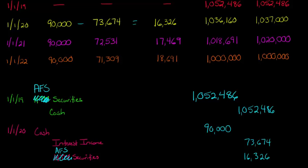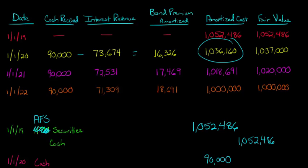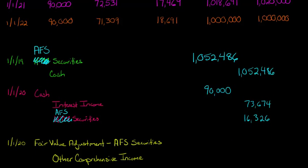Now you might say this is pretty much the same as held-to-maturity — what's the difference? Well, because we're carrying this at fair value instead of amortized cost, we need to make an adjustment. At the end of the first year, we look at the fair value of these bonds: fair value is $1,037,000, but the amortized cost is $1,036,160. So since the fair value is higher, we're actually going to have a gain. We have to mark this to market, so we debit Fair Value Adjustment — Available for Sale Securities — for $840, and then we credit Other Comprehensive Income.